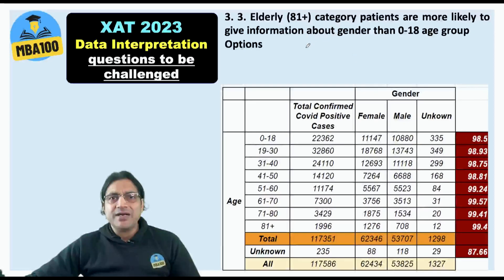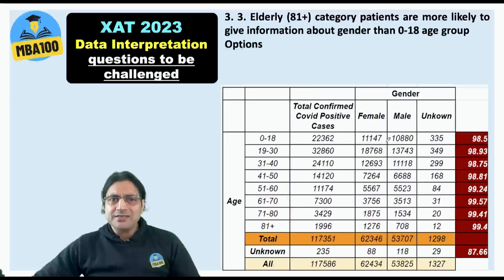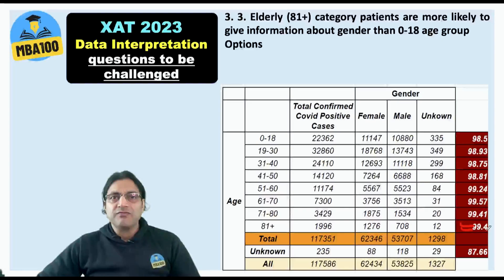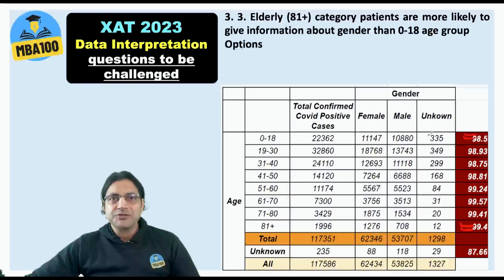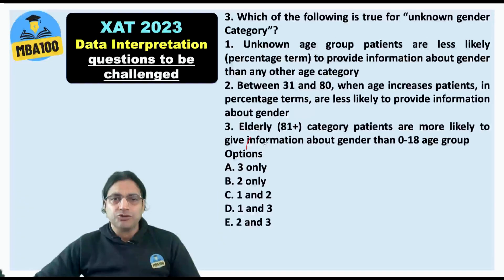Statement 3: Elderly category patients are more likely to provide gender information than the 0–18 age group. This is true. In the 81+ category, 99.4% of people have provided gender information, whereas in the 0–18 category it is 98.5%. So Statement 3 is absolutely correct. The answer should be statements 1 and 3.